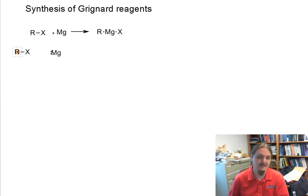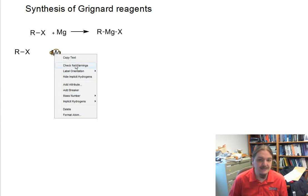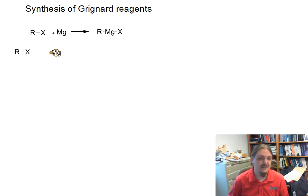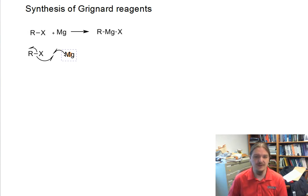It turns out that the reaction between the alkyl halide and magnesium is something of a radical reaction. Depending on where you see this mechanism presented, you might see the initial step where magnesium, because we're talking about magnesium metal with two electrons, donates one of its electrons to abstract the halogen from the carbon-halogen bond.